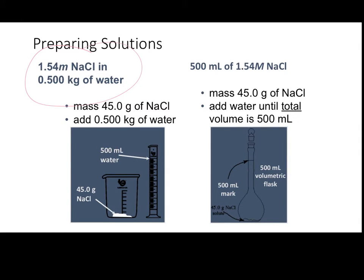In this situation, they're asking us to create a 1.54 molal sodium chloride solution in a total of 0.5 kilograms of water. And in this situation over here, they're asking us to create a 500 milliliter solution of 1.54 molar NaCl. Notice molality and molarity are being utilized to express the concentration desired, so we need to take a few steps to get the quantities of our solute and solvent and select the correct apparatus.